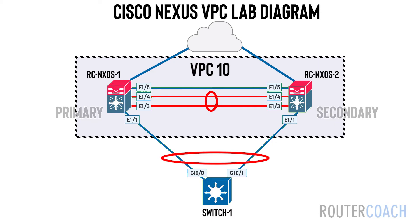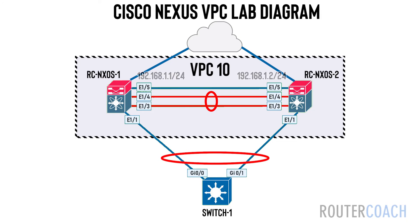The Peer Keepalive Link provides layer 3 communication to determine whether the peer is functioning correctly. The Peer Link is used to synchronise communication between the VPC peers. And finally, the VPC Domain identifies the virtual port channel and must be the same between peers.